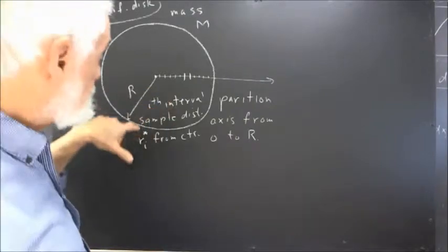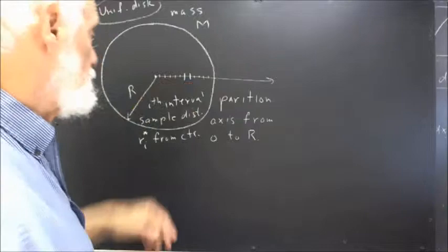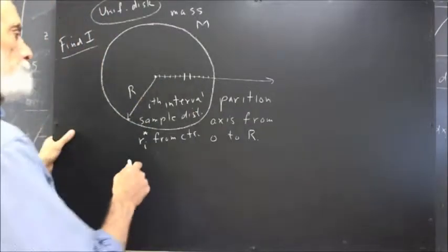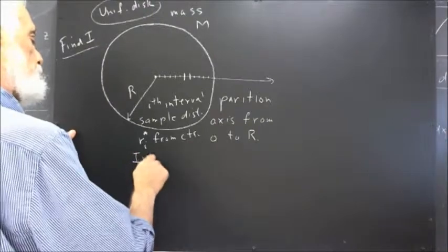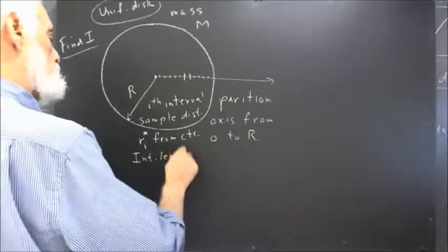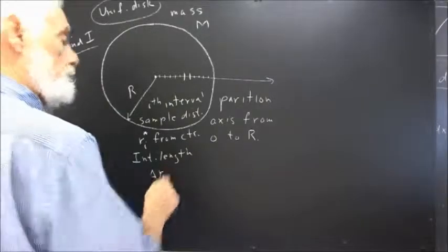That's how much mass lies between the left and the right-hand side. So let's say that the interval length is delta R.